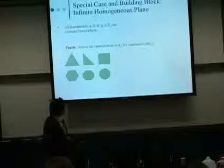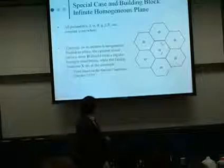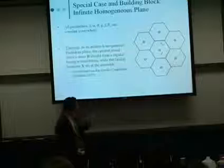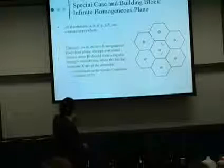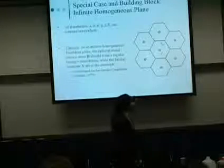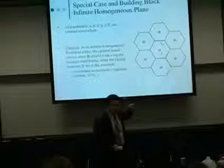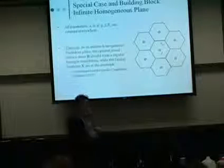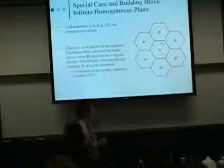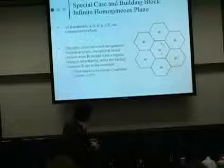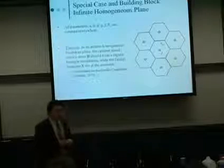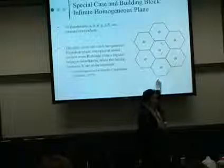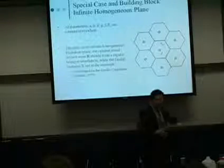It can be proven that in a homogeneous infinite Euclidean plan, the optimal initial service region has to form a hexagon partition. This can be proved based on a virtual conjecture in applied mathematics literature. Basically, the facilities should be at the center of the hexagons, and this forms a spatial pattern.